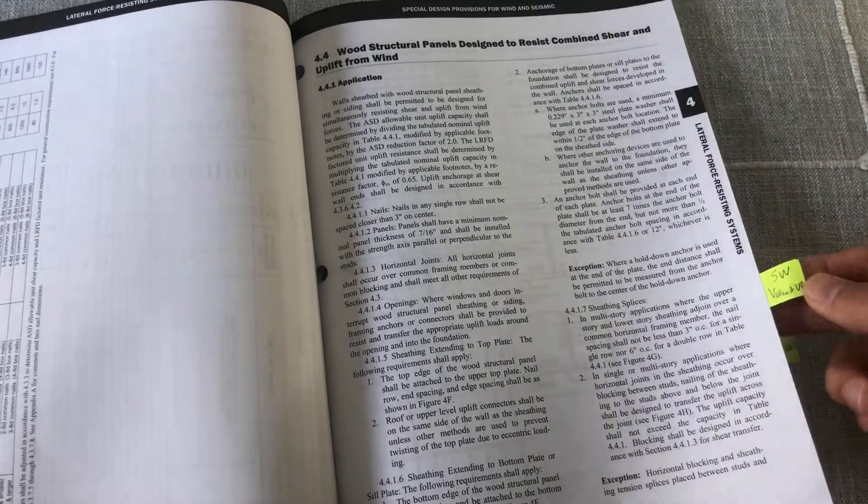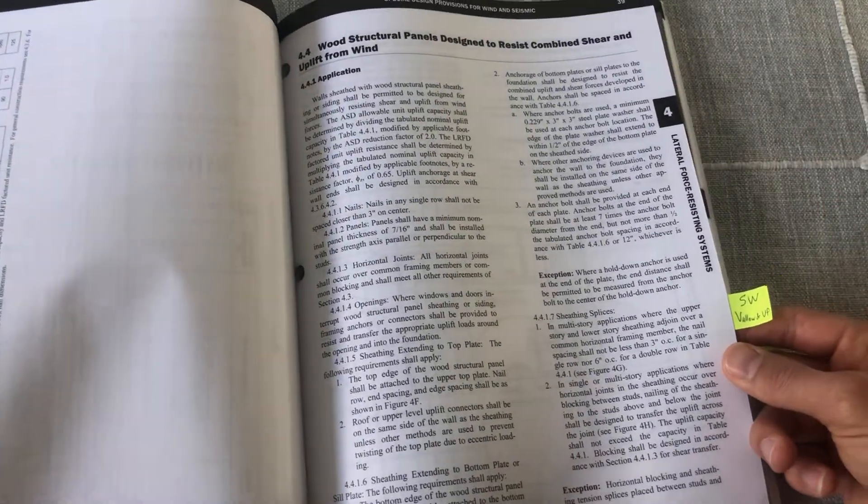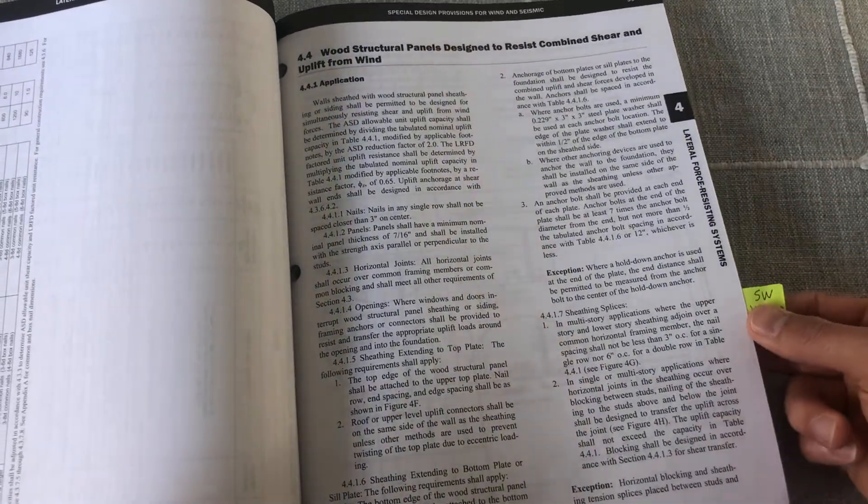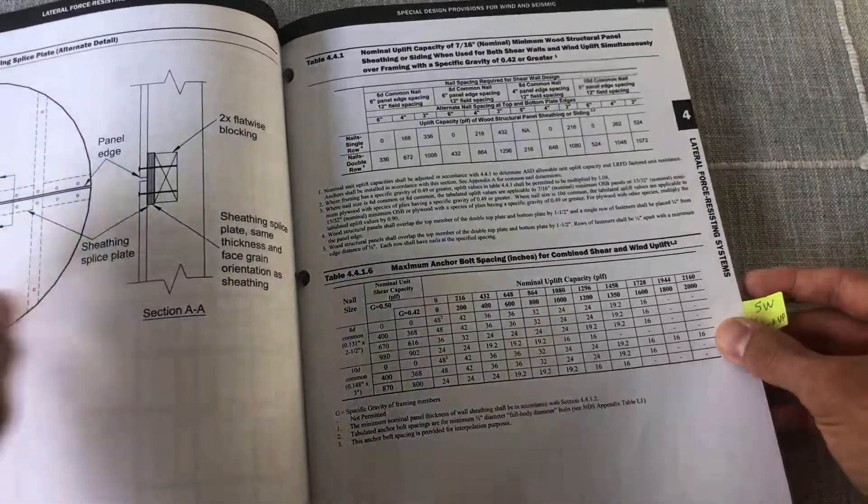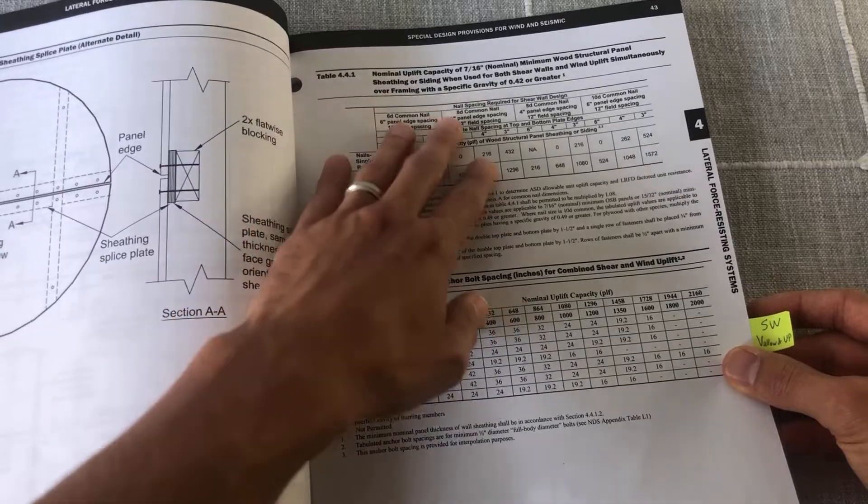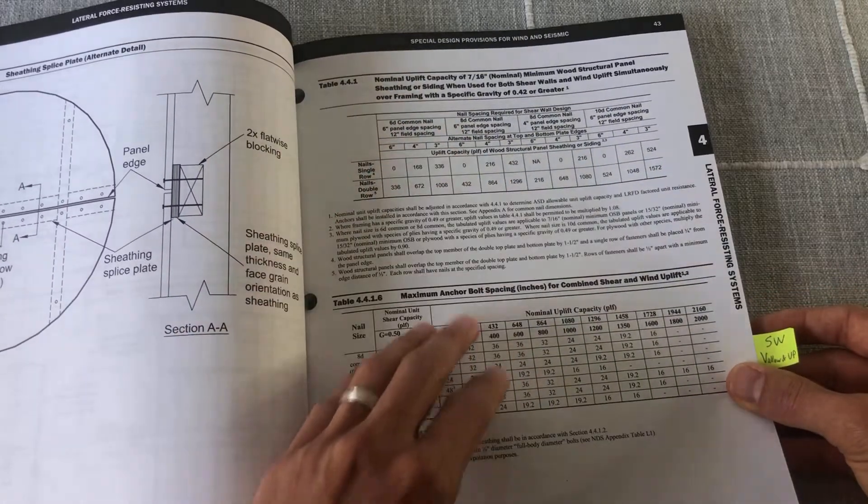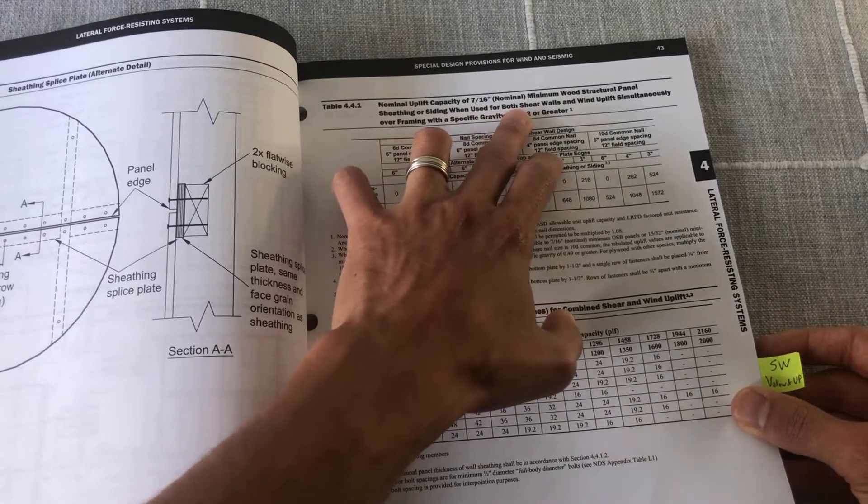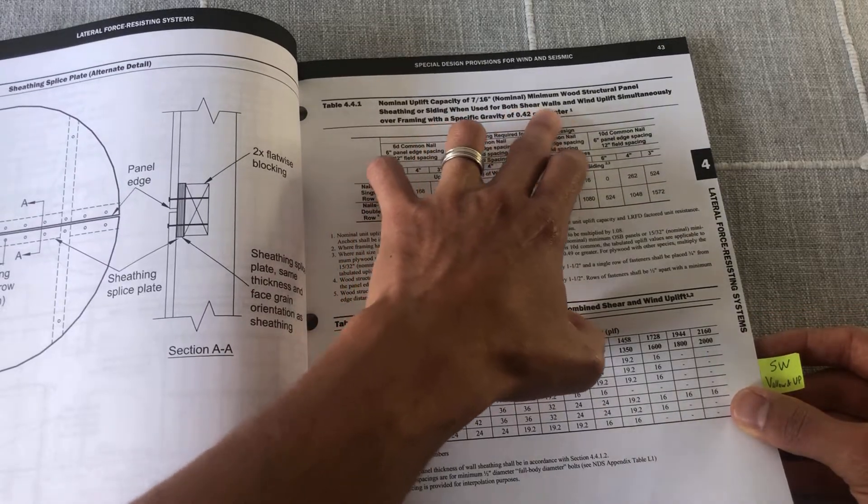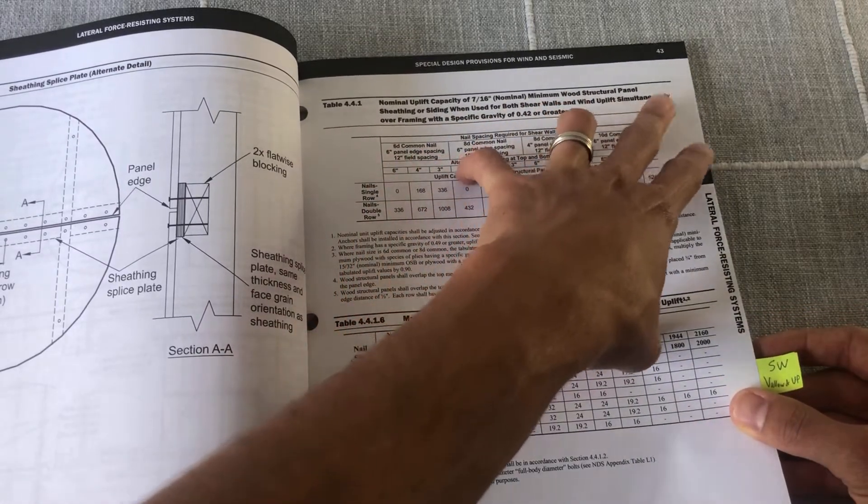Now this one here, it's when you have a shear wall with in-plane shear and uplift. And you have this first table here when sheathing or siding are used for both shear walls and wind uplift simultaneously.